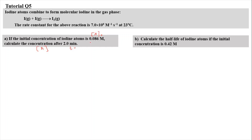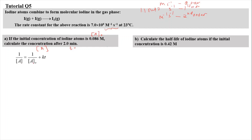As discussed in the lecture video 1.1 part 2, we can determine the order of the reaction by looking at the unit of the rate constant. The unit per molar per second refers to a second-order reaction. If it is per second, it is first order. If it is molar per second, it is zero order. Knowing it is a second-order reaction, we use the integrated rate law: 1/A equals 1/A0 plus KT.